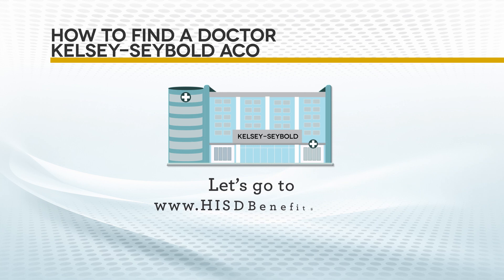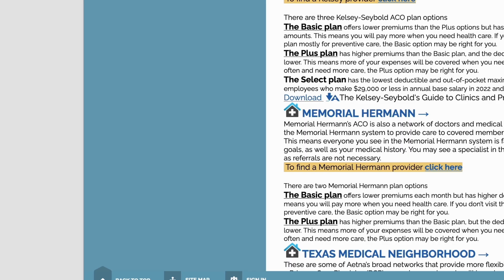Let's start by going to HISDBenefits.org. For a better display of the benefits website, we recommend that you use Google Chrome as your browser. Scroll down and on the left, click on Find a Provider.